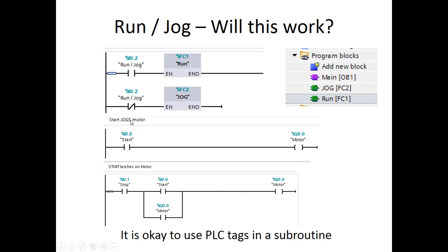In the jog subroutine, the toggle calls that and you push the start button and the motor comes on. In the run we have our holding circuit. A couple of things — we've used the output twice, which is not necessarily a good idea, but the way this is scheduled, we can only run one or the other. We put the motor into this subroutine and into this subroutine, so it's either going to run here or run here. You could get in trouble with some retentive nature of these subroutines, but it looks like this would work.